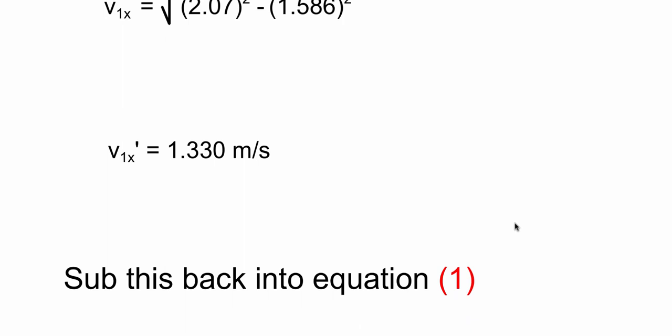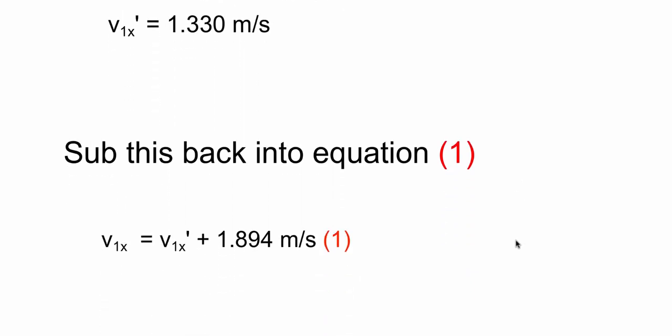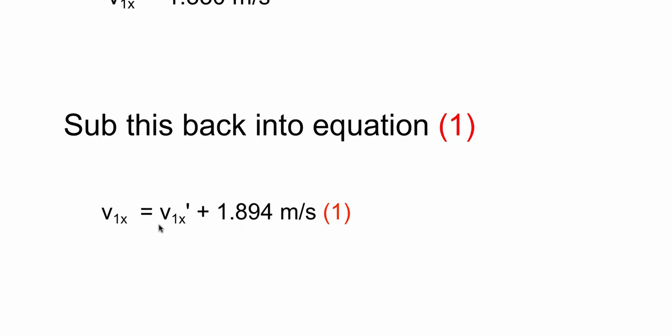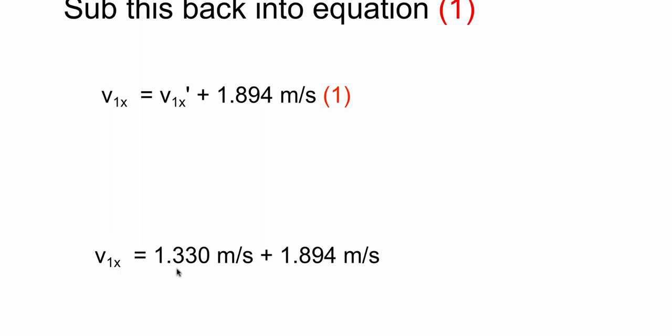I want to substitute that back into equation one. Equation one was v1x equal to v1x' plus 1.894. We just solved for v1x' which was 1.330 meters per second, plus 1.894 meters per second.